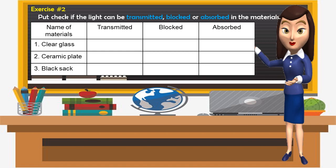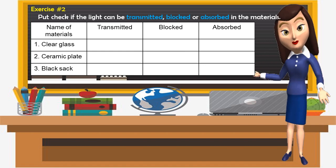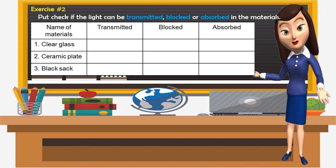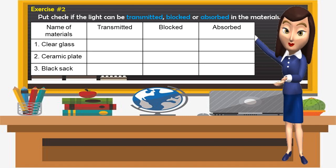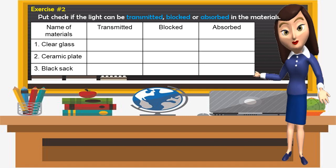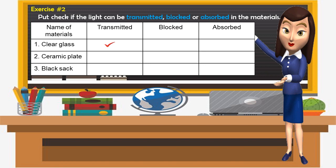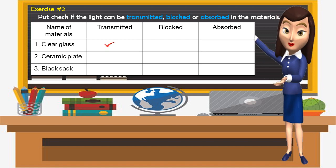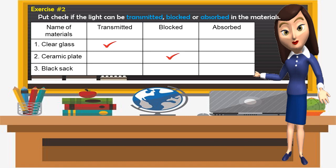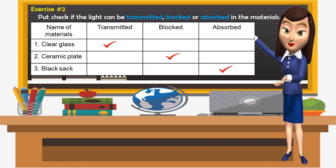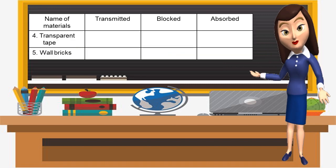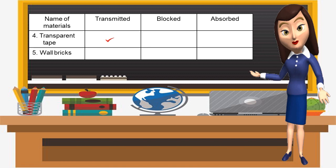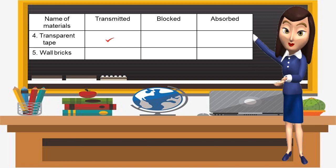Now let's have exercise number two. Put a check if the light can be transmitted, blocked, or absorbed in the materials. First, clear glass — it is transmitted. Number two, ceramic plate — the light will be blocked. Black sack — the light would be absorbed. Number four, transparent tape — the light will be transmitted. And lastly, wall bricks — the light would be blocked.